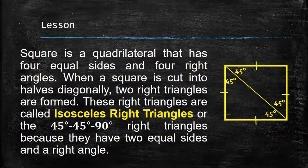A square is a quadrilateral that has four equal sides and four right angles. When the square is cut into halves diagonally, two right triangles are formed. These right triangles are called isosceles right triangles, or the 45-45-90 degree right triangles, because they have two equal sides and a right angle.